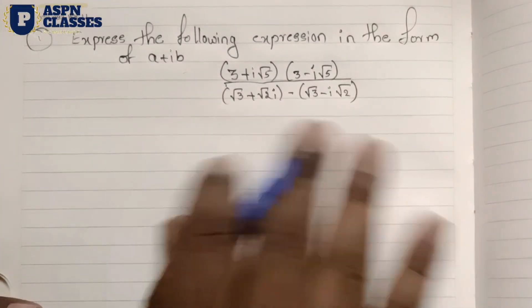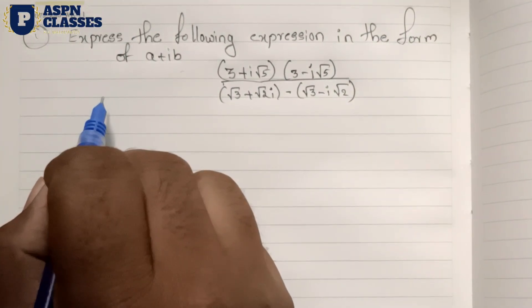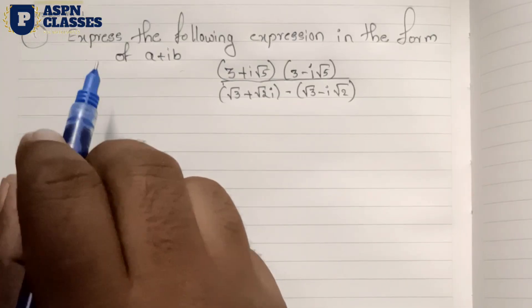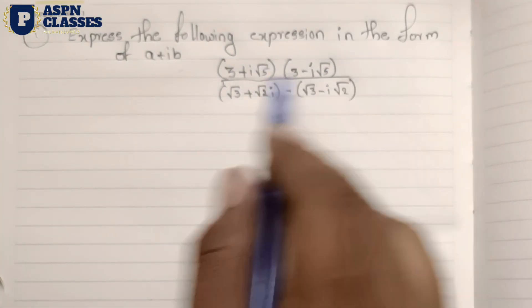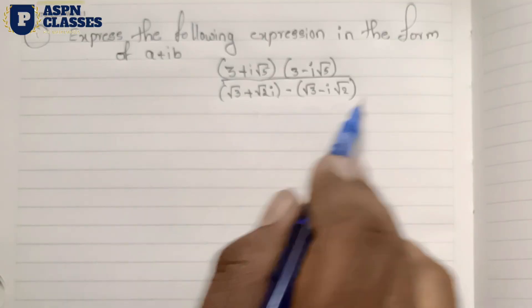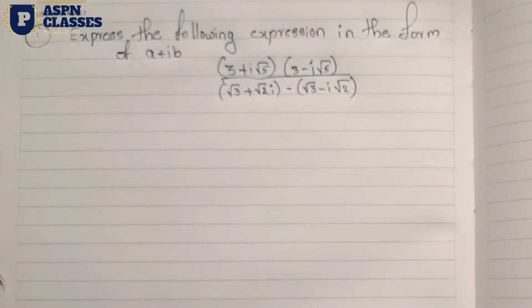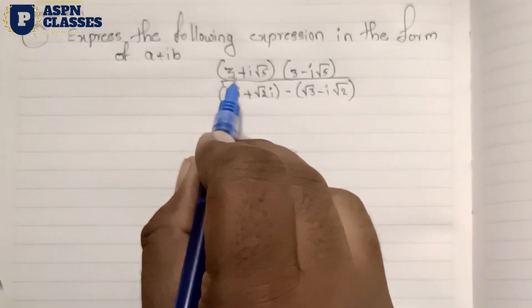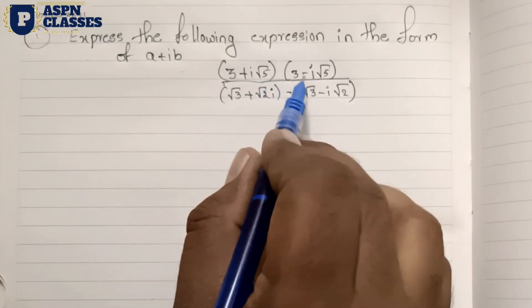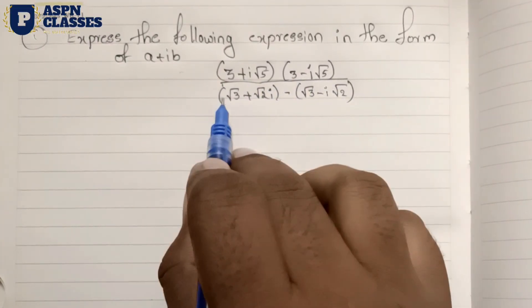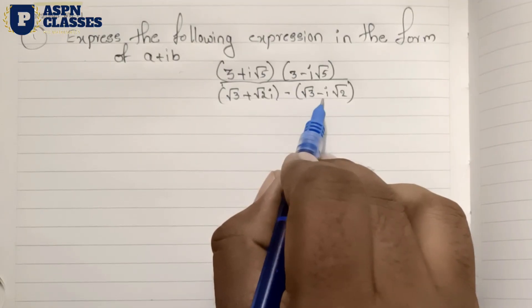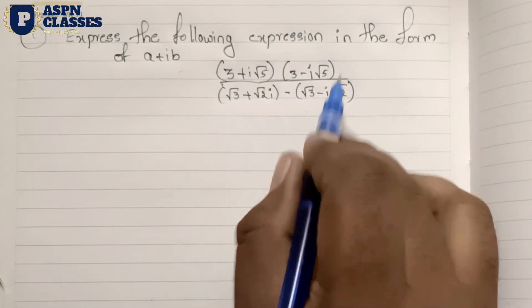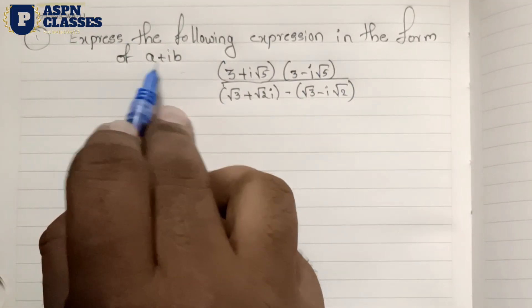Hi friends, welcome to the ASPEN classes. Here we are going to discuss the 3 marks important question in the form of a plus ib. The question is: (3 + i√5)(3 - i√5) divided by (√3 + √2·i)(√3 - i√2). We will express this in the form of a plus ib.